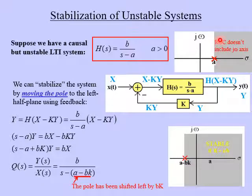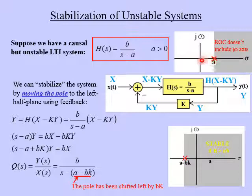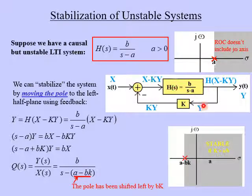Remember from chapter nine, since this is a causal system, the region of convergence is to the right of the pole. In this case, it does not include the J-omega axis, so this is by definition an unstable system — we need this pole to be in the left half plane for a stable system. What we can do is stabilize the system by moving this pole to the left half plane, and the way we do this is by putting this system into a feedback system.